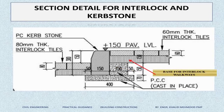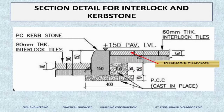After curbstones are fixed, step four is casting in-situ concrete behind the curbstone. After casting the concrete, we do backfilling and prepare a base for the interlock. Here you can see we are preparing the base for the interlock, and the interlocks used in walkway areas are six centimeter thick.